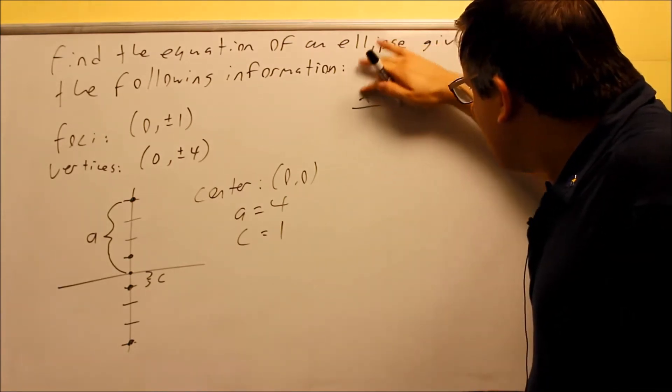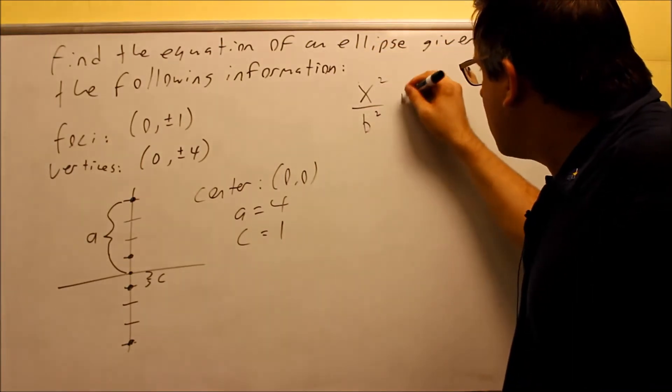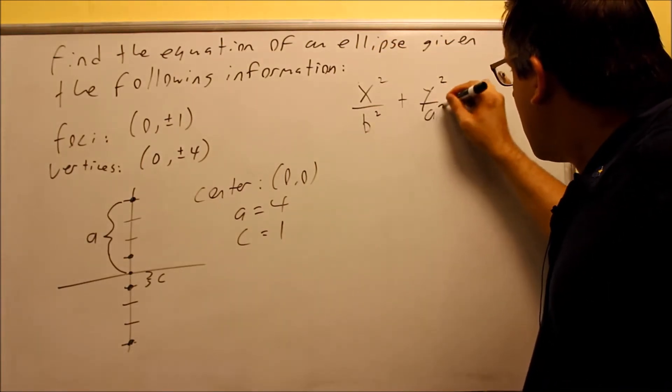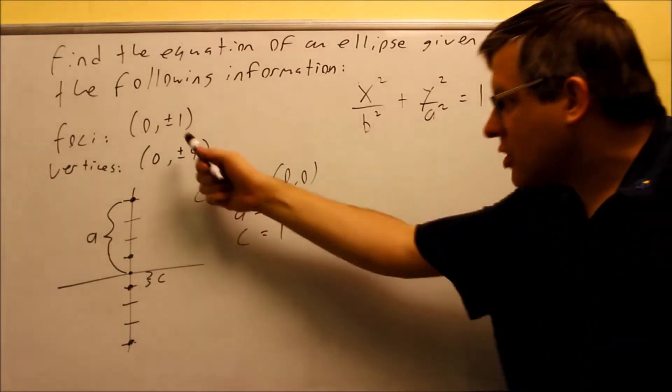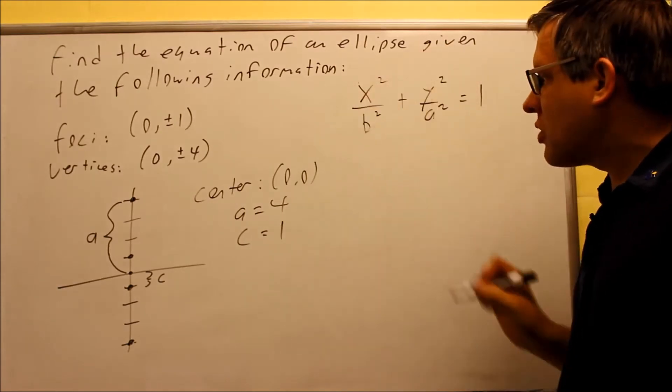Now the a value is going to be underneath the y term because it's opening in the y direction. So because it opens up and down, a has to go underneath the y. So this is my base formula I'm starting with.